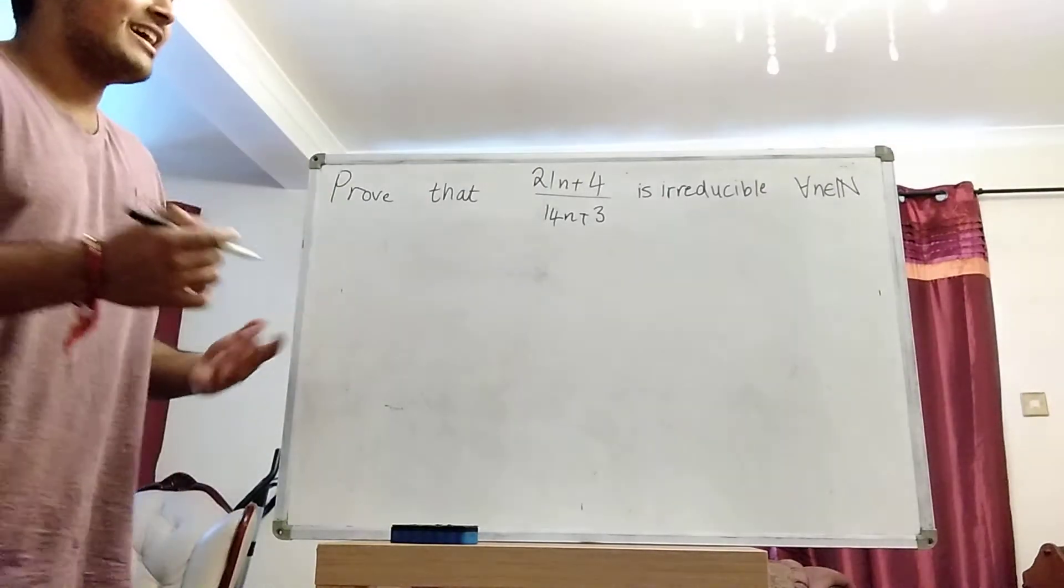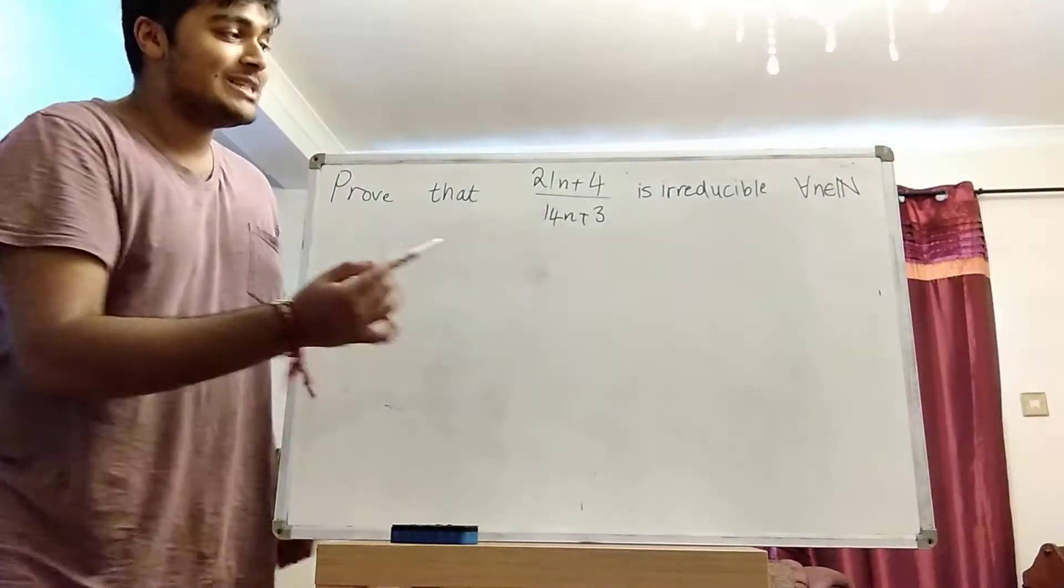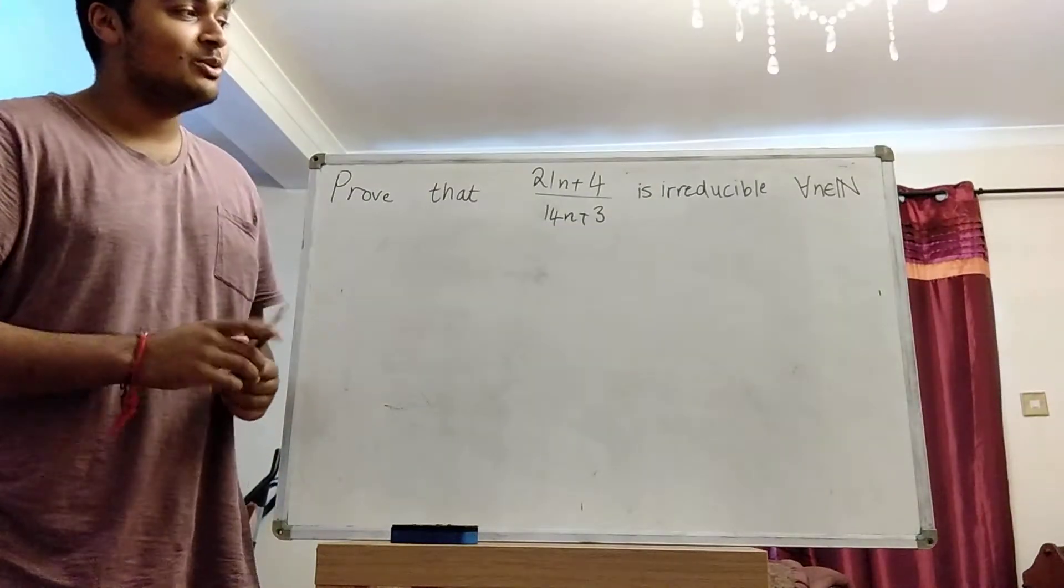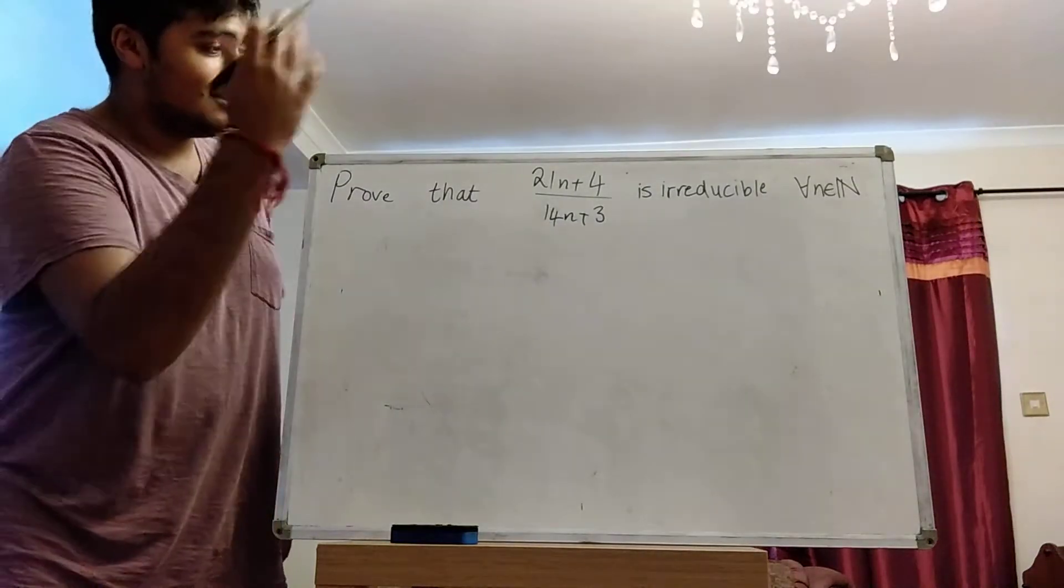We want to prove that 21n plus 4 divided by 14n plus 3 is irreducible for all positive integers n.